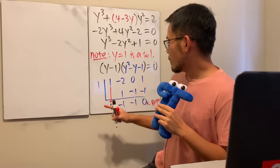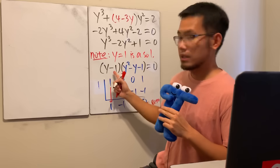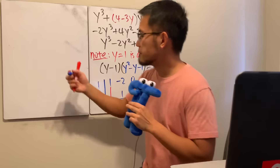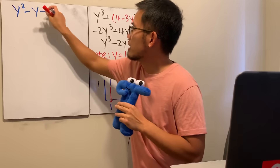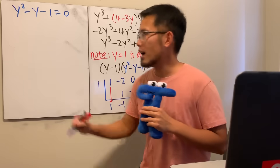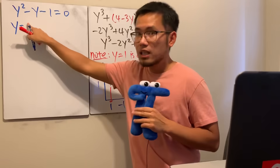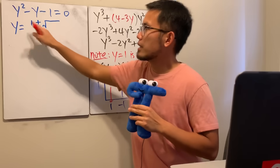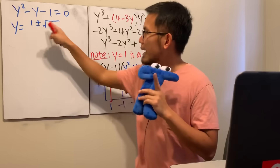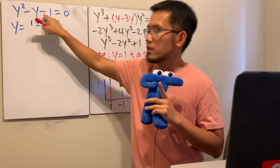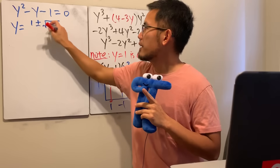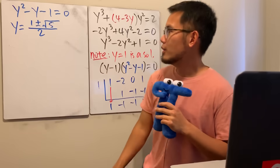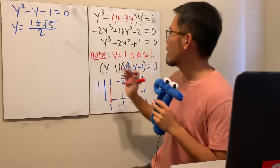So y = 1 solves one factor. For the other factor, we solve y² − y − 1 = 0 using the quadratic formula: y = (1 ± √(1 + 4)) / 2 = (1 ± √5) / 2. We end up with the golden ratio — how nice!